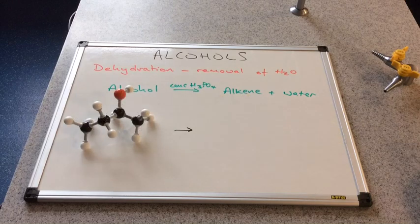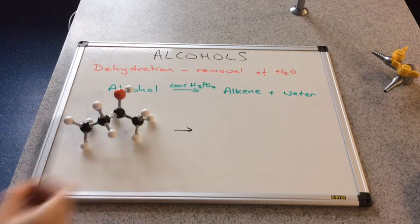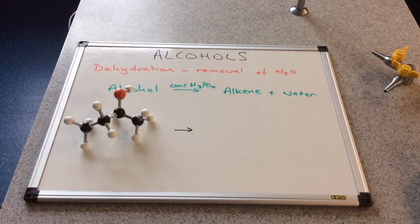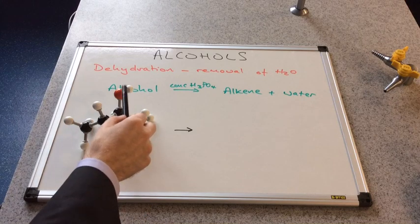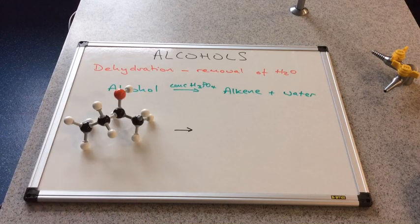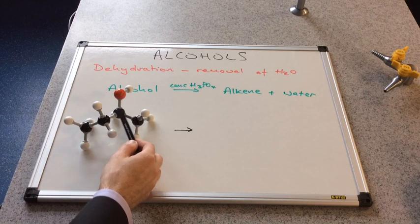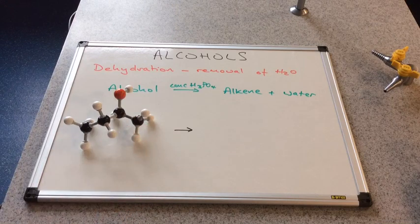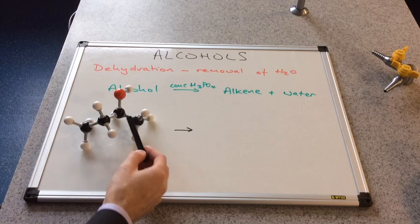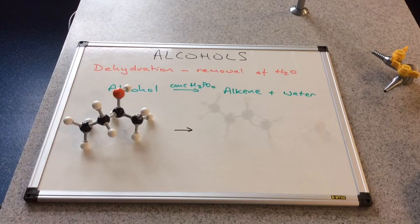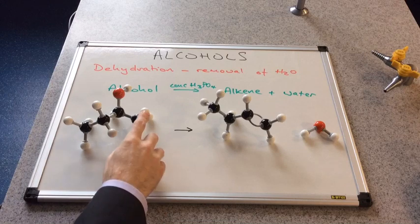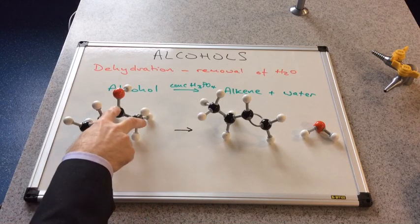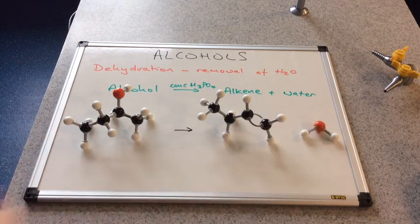I've moved the hydroxyl group to the second carbon, so this is now butan-2-ol. Again, in the presence of concentrated phosphoric acid, we remove water and look at which possible alkenes could form. In butan-2-ol we've got two adjacent carbons to the hydroxyl carbon. Looking at the first adjacent carbon, I remove one of those hydrogens — the double bond forms there — and we've eliminated the water molecule, giving but-1-ene as one possible product.